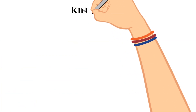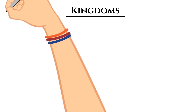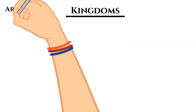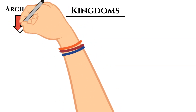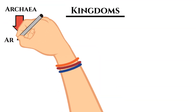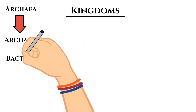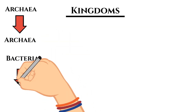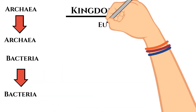After the three domains, we can break it down further into kingdoms — there are six kingdoms. The first kingdom is Archaea, and it is the only kingdom in the Archaea domain. The second kingdom is Bacteria, which is also the only kingdom in the Bacteria domain. Both include the organisms we discussed.